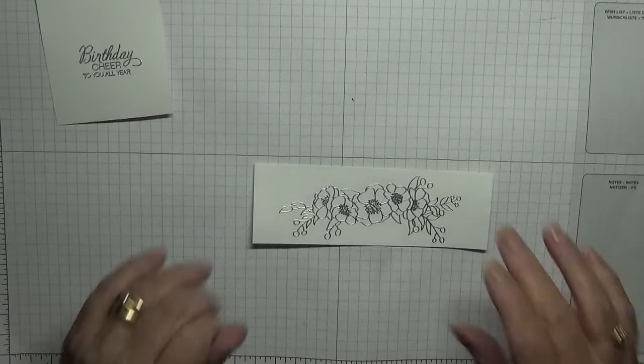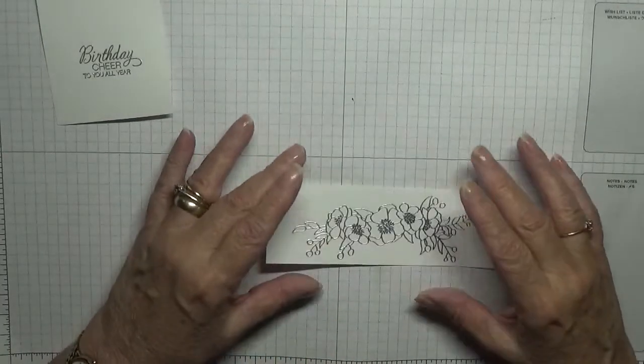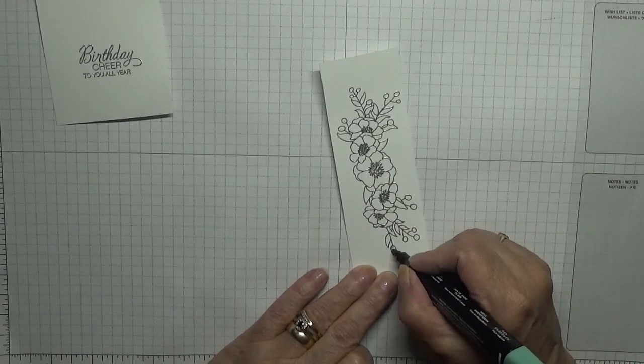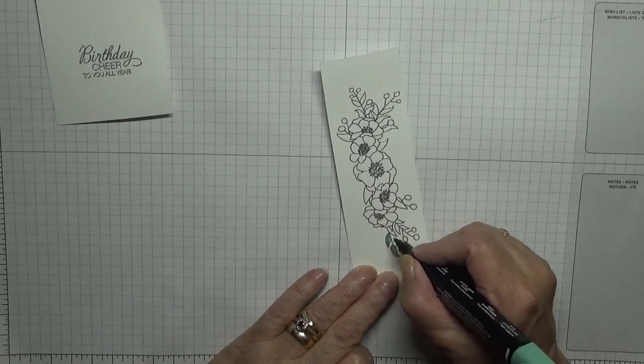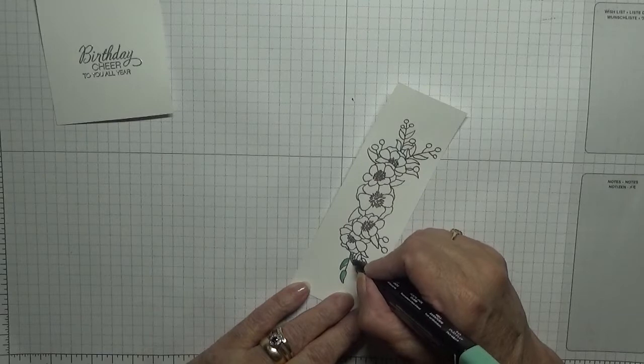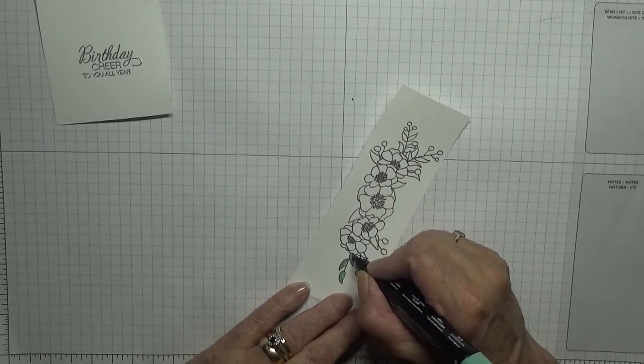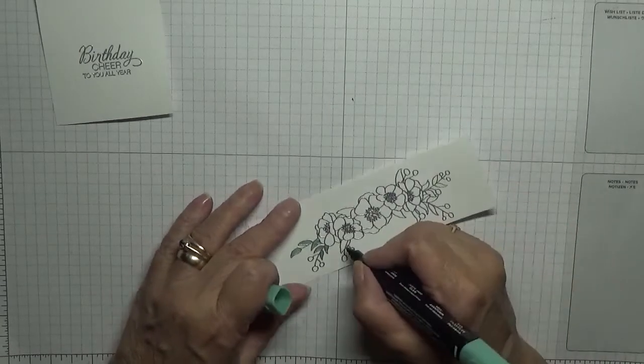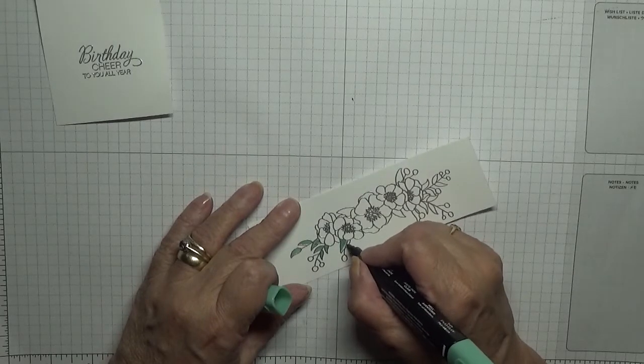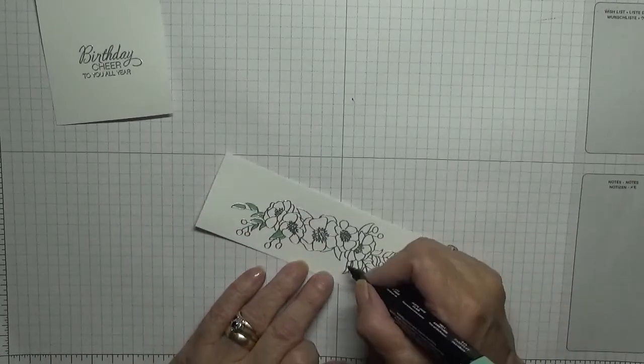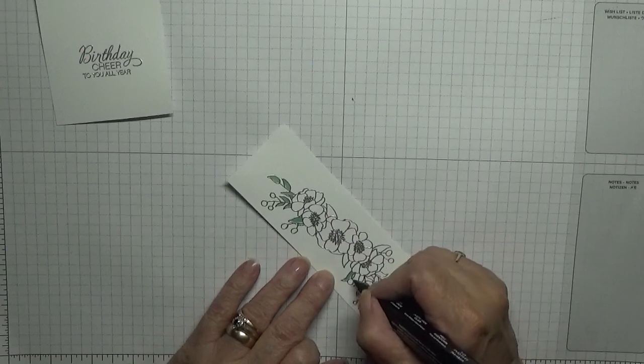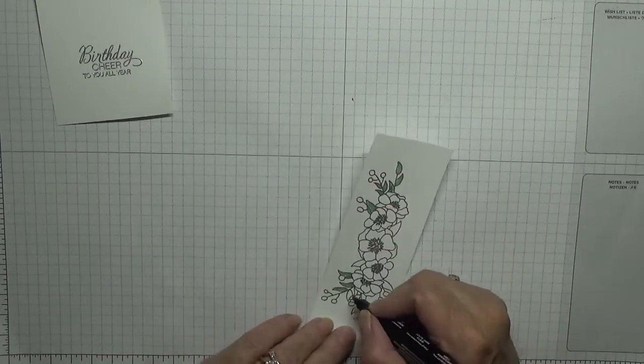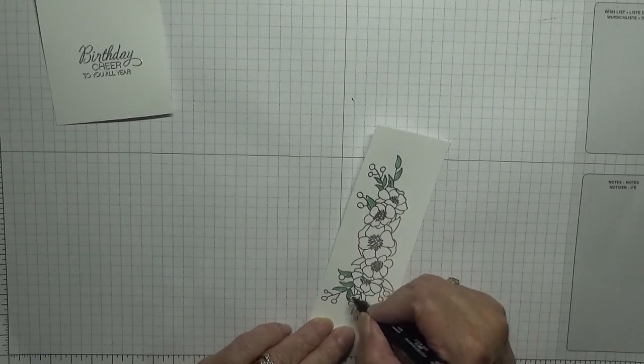Before we cut it out, we're going to color it in because it'll be easier to cut it out while we've got a big space. With the Just Jade we're going to color the leaves. Quite a nice greenness. It's a bit hard to see the embossing in this light.